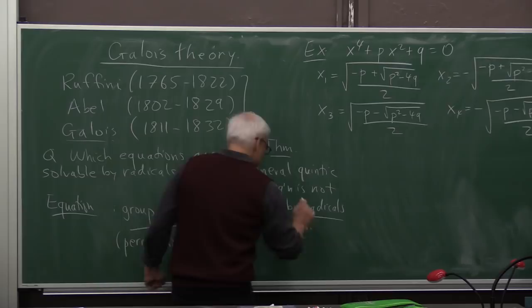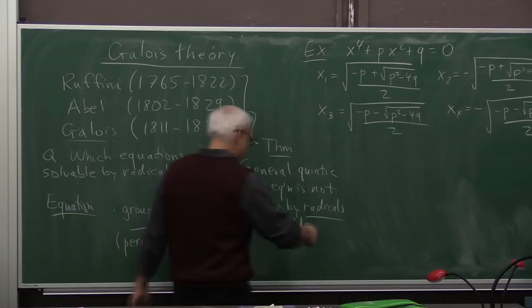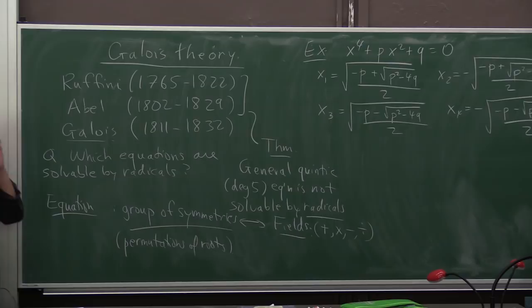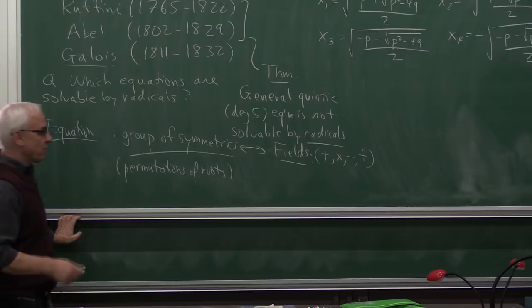But he went further and he associated to these things fields. Okay, what's a field? So a field is basically an arithmetical domain, which is a lot like the rational numbers, where you have your four operations of addition, multiplication, subtraction, and division. And, of course, the standard field is the field of rational numbers. But Galois also realized that it was possible to consider larger fields.